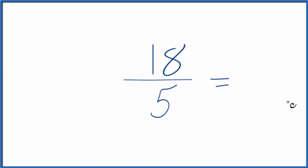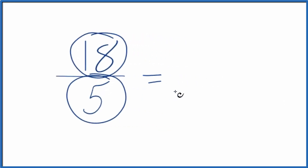We need to find a common factor, something that goes into 18 and 5 evenly. When I look at these numbers, the only number that's going to go into both 18 and 5 is 1.